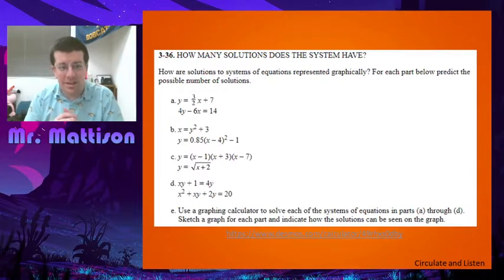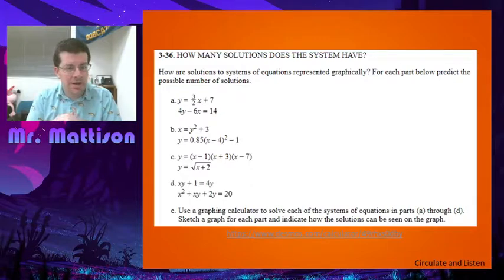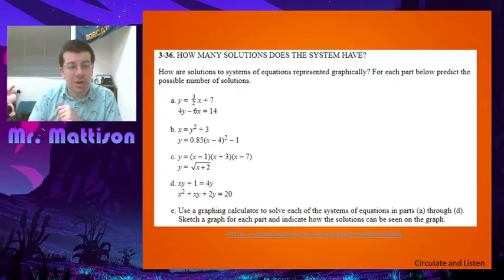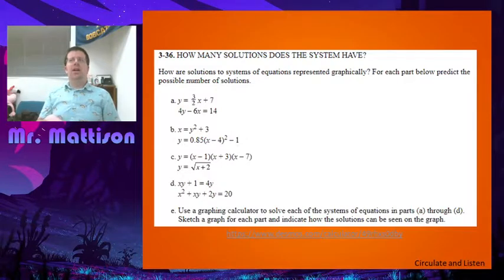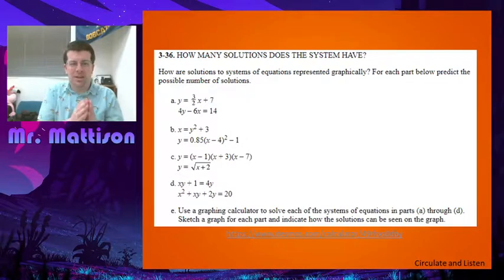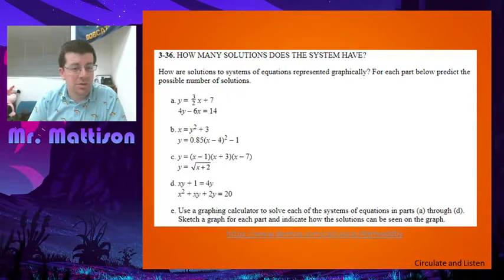You're not trying to actually solve these out. All I want you to do is look at it and say, how many types of solutions could I possibly have here? For instance, on this first one, I see that I have two linear equations. So if I have two lines, I'm either going to have no solutions when they are parallel, infinitely many solutions when they are the exact same line, or one solution where they intersect.